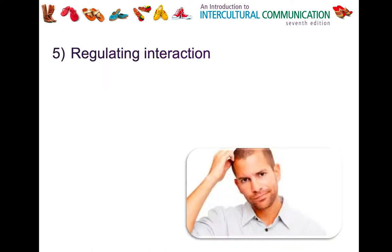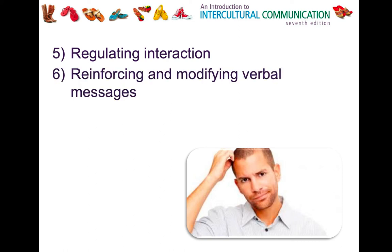The fifth function is that we use nonverbals to regulate interaction — through facial expressions, gestures, and body language. We can signal 'I'm interested, keep talking' or 'I need to go, I don't want to be in this conversation.' You might look at your watch, break eye contact, or even turn your body slightly to show you don't want to participate in the conversation anymore.